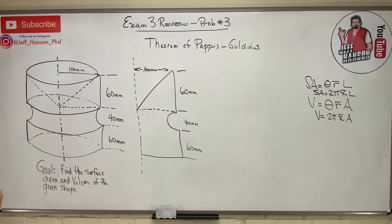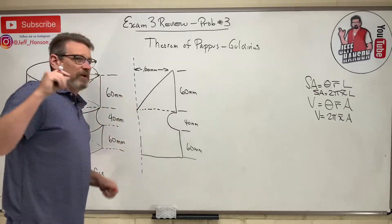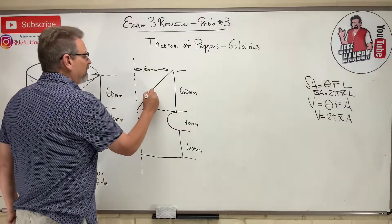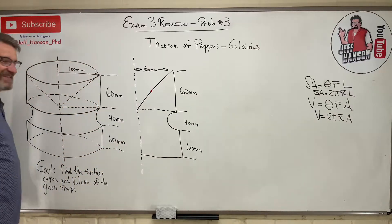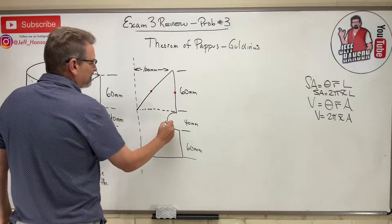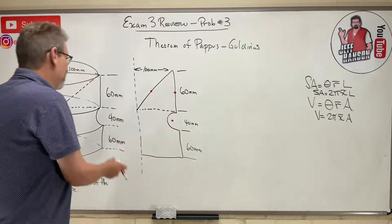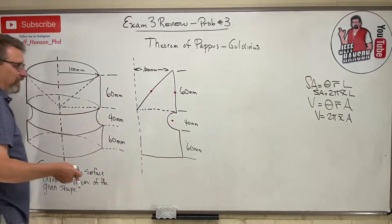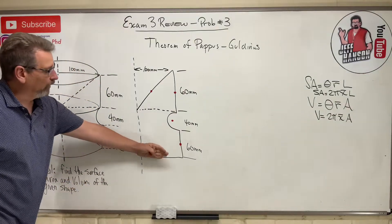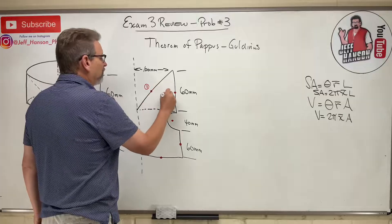Let's do surface area first. I'm going to put a big fat dot on every line segment that's going to touch the outside of the part. This line here will touch the inside of the cone when it sweeps around. This line here touches that outer band all the way around. The semicircle — the dot is not on the line because the centroid of a half-circle arc is not on the line itself — sweeps out the groove. This line sweeps out the bottom band, and the bottom line sweeps out the entire bottom surface.